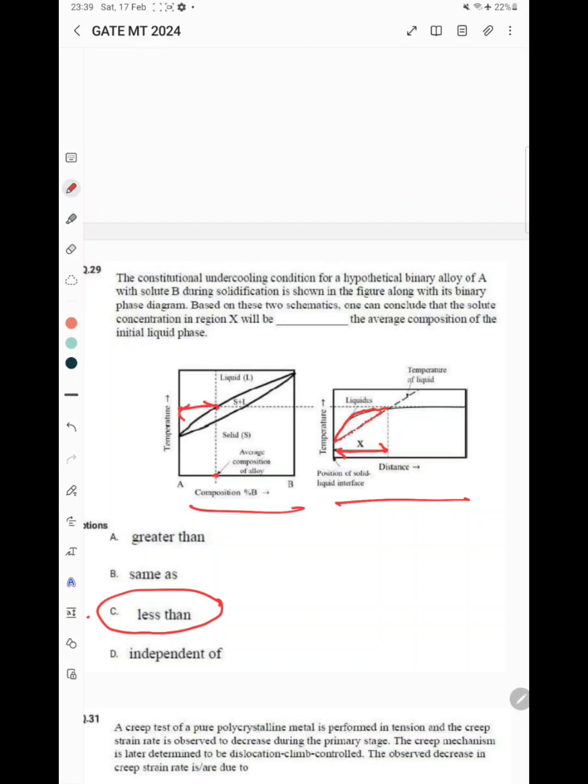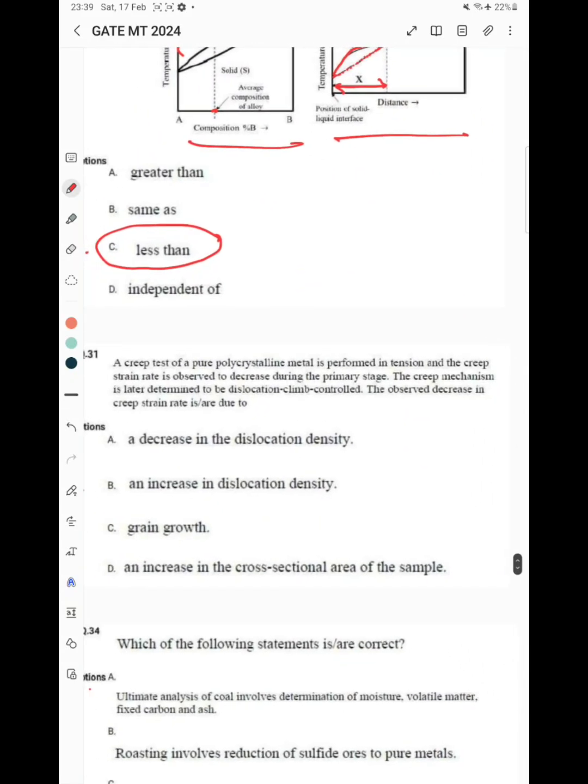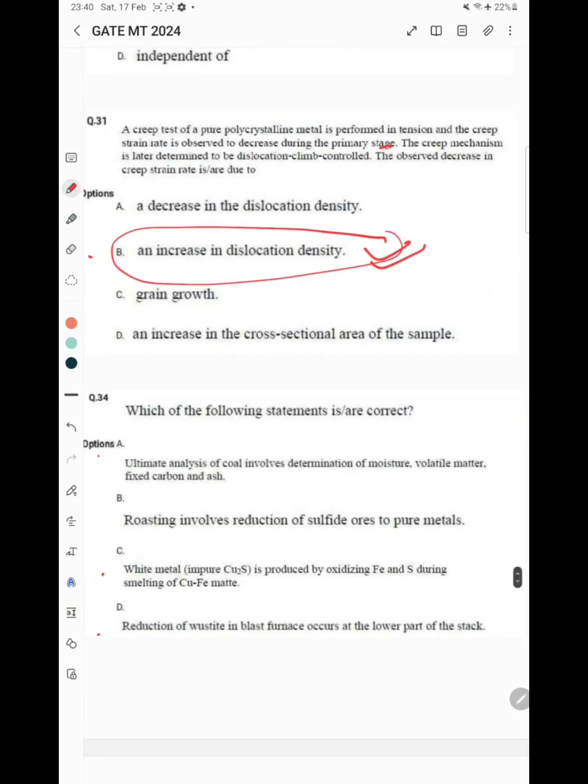The next question is about a creep test. A creep test of pure polycrystalline metal is performed in tension and the creep strain rate is observed to decrease during the primary stage. The creep mechanism is later determined to be dislocation climb controlled, and the observed decrease in creep strain rate is due to an increase in the dislocation density.